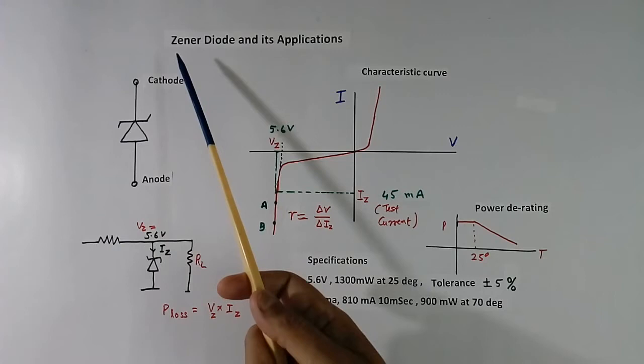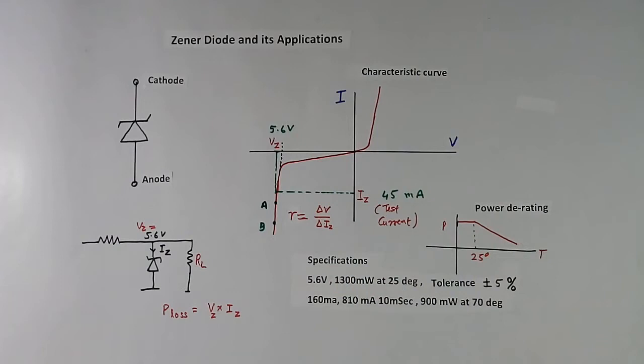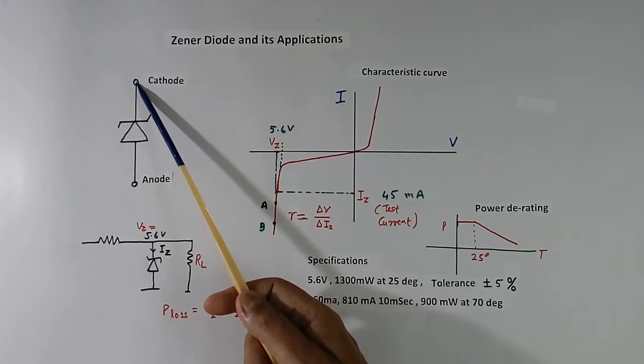Today I will explain function of Zener Diode and its applications. This is symbol of Zener Diode. It has two terminals, one is anode and one is cathode. This is special type of diode.